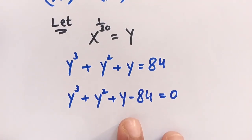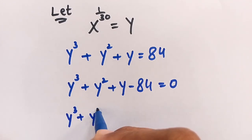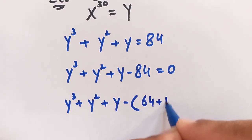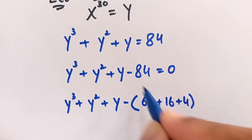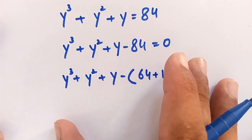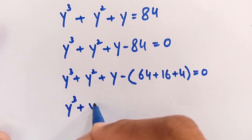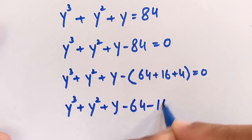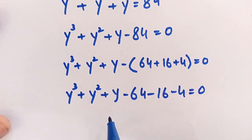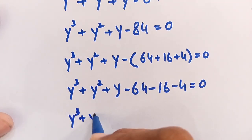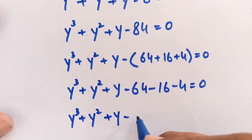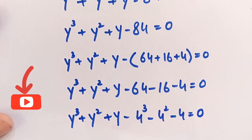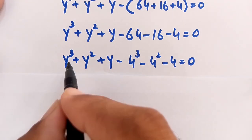We know that 84 is equal to 64 plus 16 plus 4. So the equation y³ + y² + y − 84 = 0 becomes y³ + y² + y − 64 − 16 − 4 = 0. We note that 64 is 4 cubed, 16 is 4 squared, and 4 is just 4. So we regroup: y³ − 4³, plus y² − 4², plus y − 4, all equal to 0.